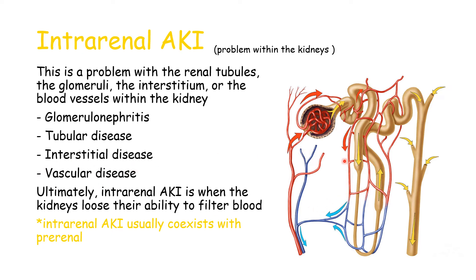Vascular disease involves all the tiny blood vessels within our kidneys. Ultimately, intra-renal AKI is when the kidneys lose their ability to filter blood. In pre-renal it's a lack of blood to the kidneys; in intra-renal, the kidneys actually lose their ability to filter blood. Intra-renal AKI usually coexists with pre-renal AKI, and we will talk about that in just a bit.